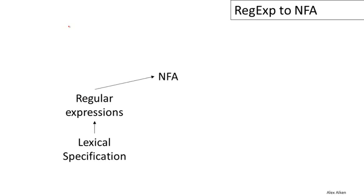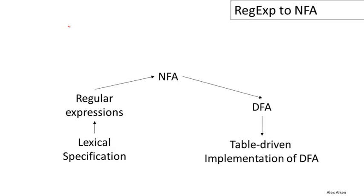The first part is to translate those regular expressions into non-deterministic finite automata that recognize exactly the same thing. Then those non-deterministic automata are translated into deterministic automata. And finally, those deterministic automata are implemented as a set of lookup tables and a little bit of code for traversing those tables. In previous videos, we've talked about some of these pieces and defined others. So now we're ready to put the whole thing together, and in this particular video, we're going to focus on the translation of regular expressions to non-deterministic finite automata.